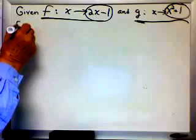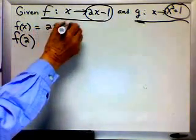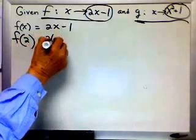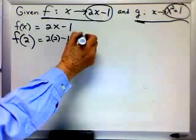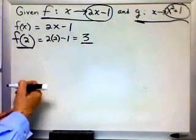f of x equals 2x minus 1. So f of 2 would be 2 times 2 minus 1, which would be 4 minus 1, which would be 3. So f of 2 equals 3.